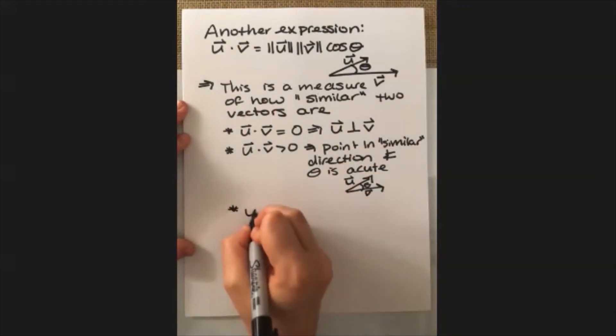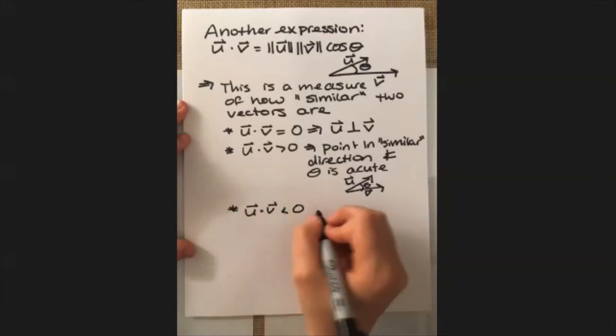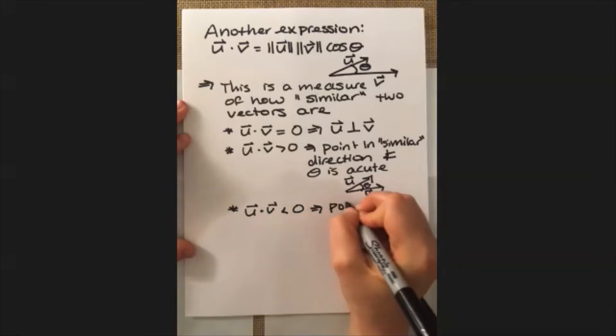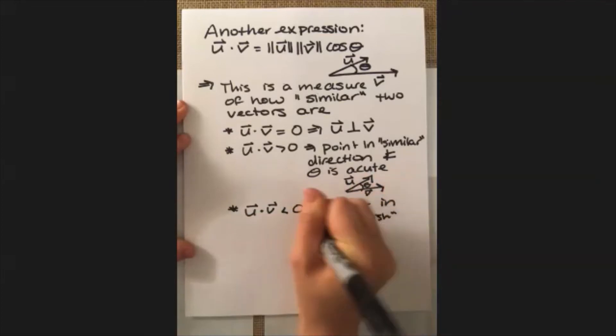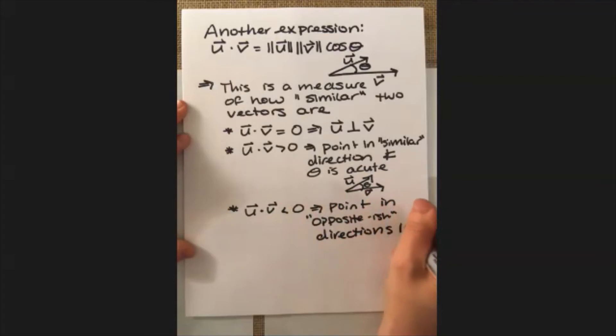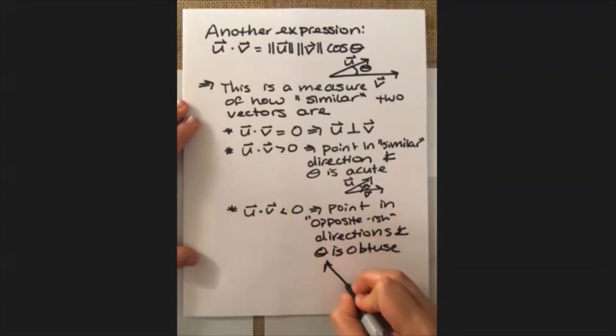And finally, if it's less than zero, we have the opposite idea. So they're going to point in kind of opposing directions, but not necessarily exactly opposite, just kind of like opposite-ish. But the big idea there is just that theta is obtuse.